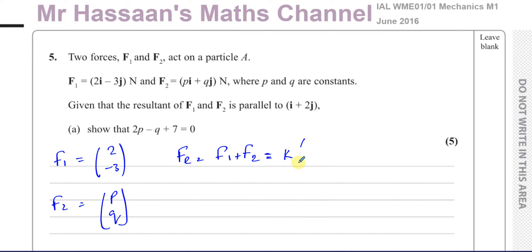So it's equal to some constant K times (1, 2), I plus 2J. So when two vectors are parallel, they are equal to a constant times each other, basically.